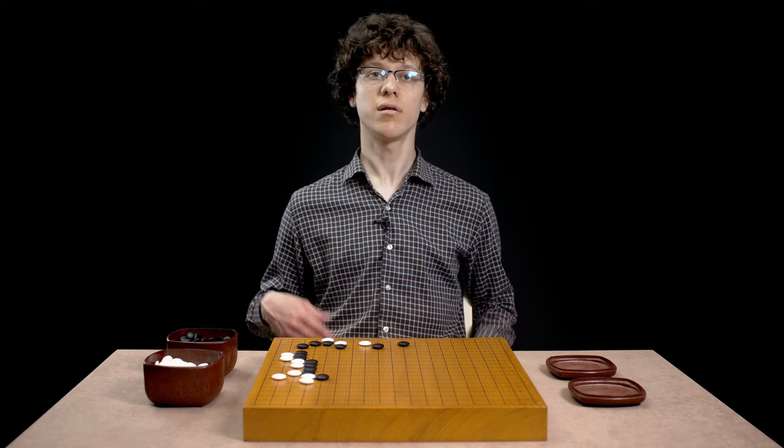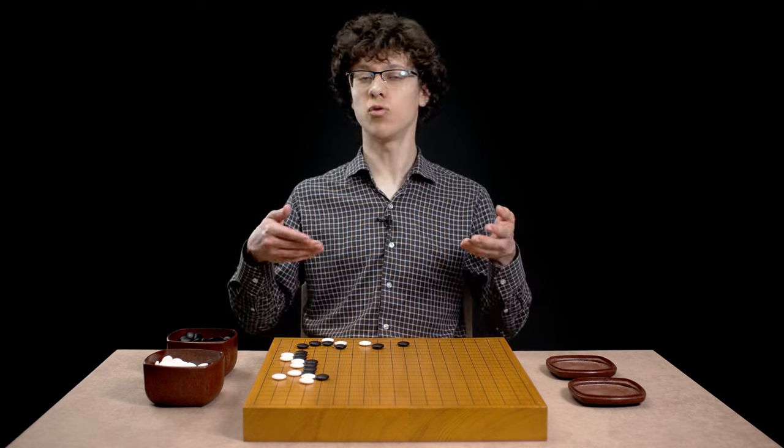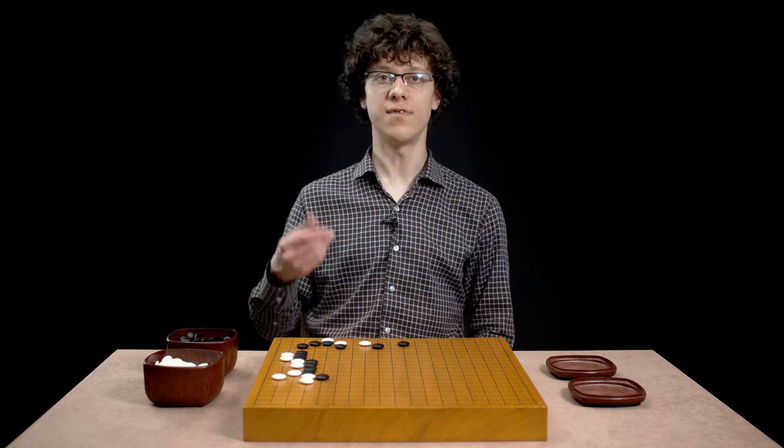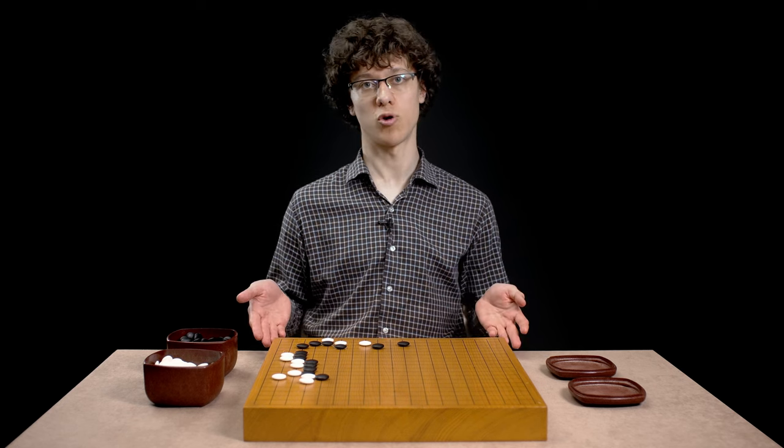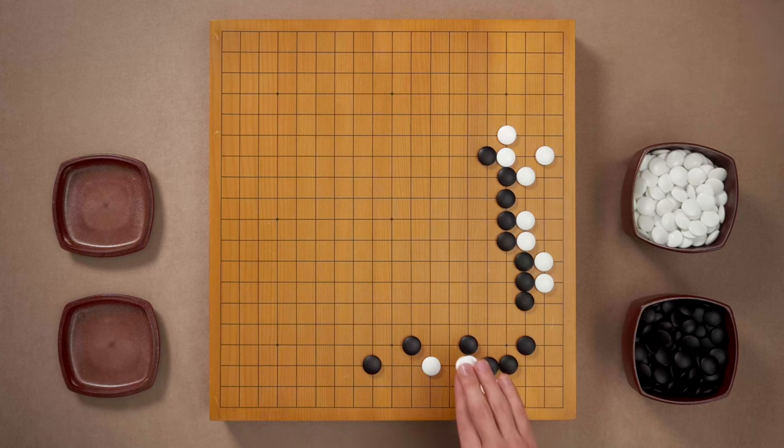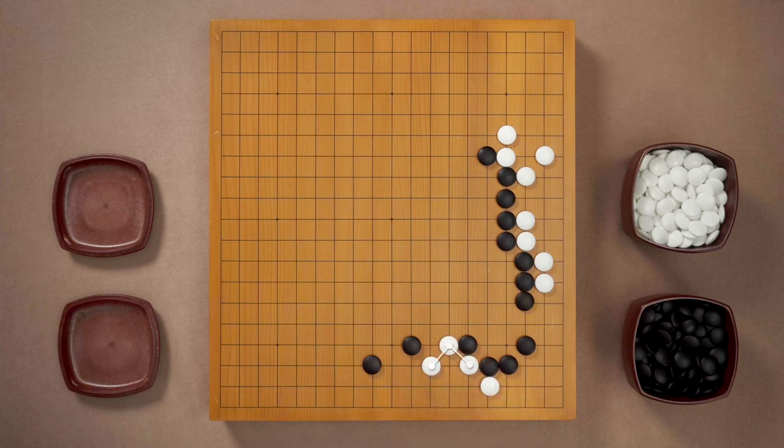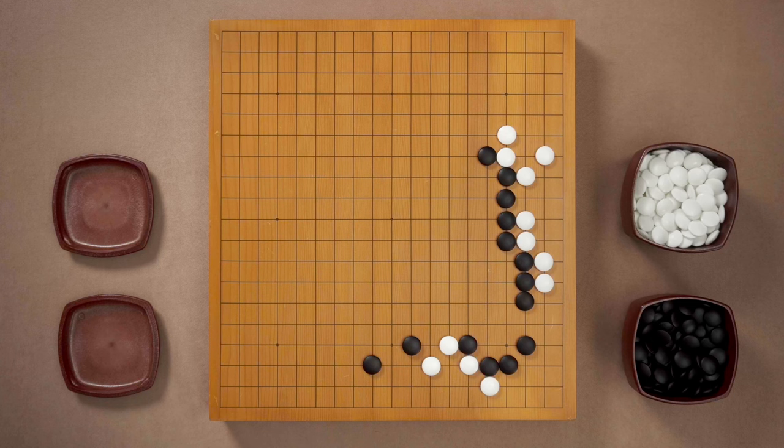It's time to learn the first basic technique, how to provoke a ko. It's very useful, especially when you are trying to make a good shape in your opponent's framework. The trick is to play a tiger's mouth. This move aims at getting a big living space and also it tries to go out.